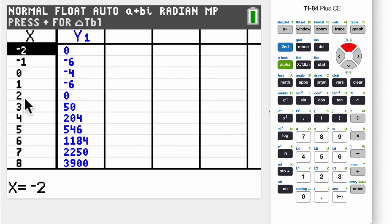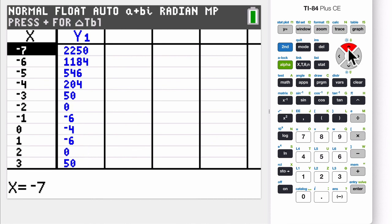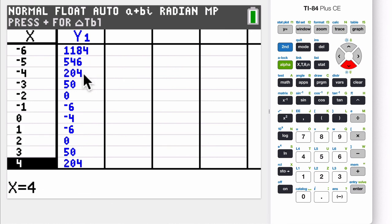And if I scroll up, we'll see some more of that symmetry. Two and negative two both get me zero, and so on and so forth. Three and negative three both get me 50. That's the even function. And I'll scroll up a little bit so you can see. I think right down here we had some nice symmetry in the window right there.